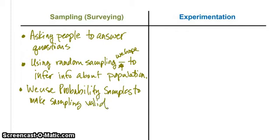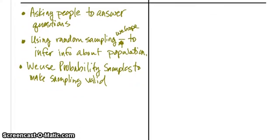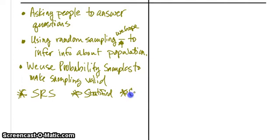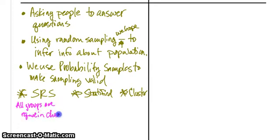What are the probability sampling methods? We've got SRS, stratification, and cluster. Remember, SRS is the only one where all groups are equal in chance to be chosen — it's the only one that allows a subset or groups to be used. All groups are equal in chance to be chosen. That's SRS.